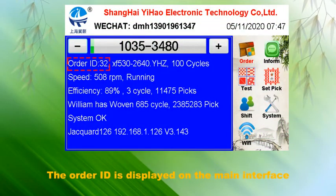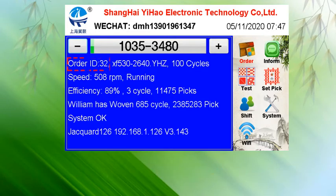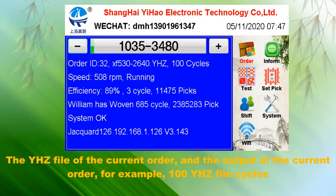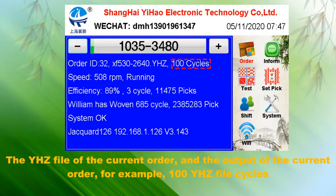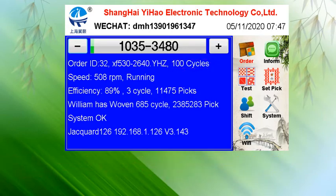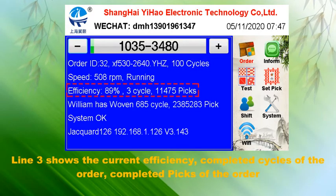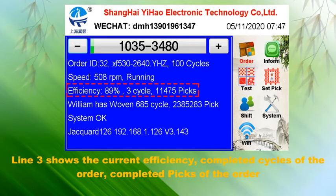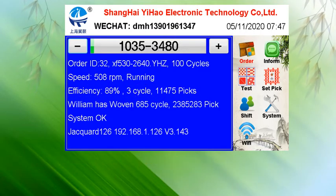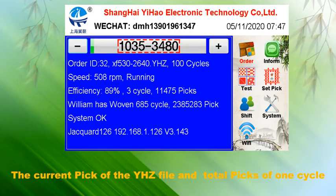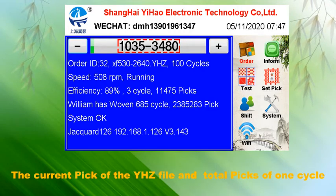The order is displayed on the main interface, showing the YHZ file of the current order and its output — for example, 100 YHZ file cycles. Line 3 shows the current efficiency, completed cycles of the order, and completed picks of the order. The progress bar shows the completion percentage of the order, as well as the current pick of the YHZ file and total picks of one cycle.